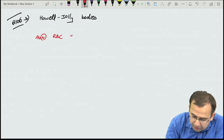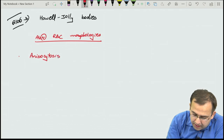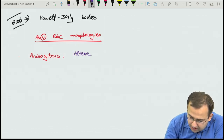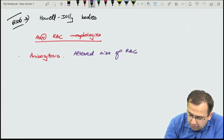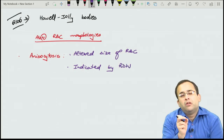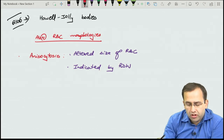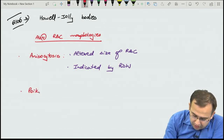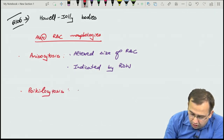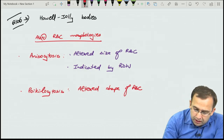Reviewing abnormal RBC morphologies: anisocytosis is altered size of the RBC, indicated by RDW (red cell distribution width), versus poikilocytosis which is altered shape of the RBC.